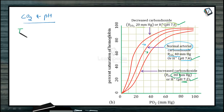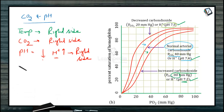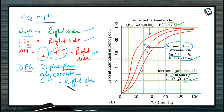In summary, there are four major factors. First, increasing temperature shifts the curve right — less affinity of hemoglobin for oxygen. Second, increasing CO2 also shifts the curve right — again decreasing affinity. Third, decreasing pH (i.e., increasing H+ ions, more acidic conditions) shifts the curve right. Fourth, increasing levels of 2,3-diphosphoglycerate (DPG) also shifts the Bohr curve to the right side.